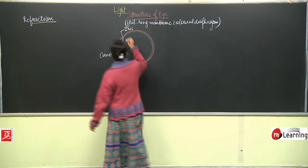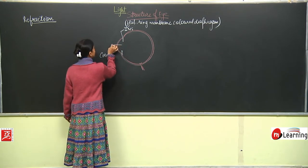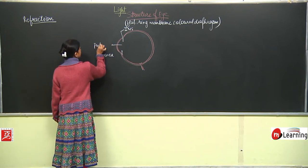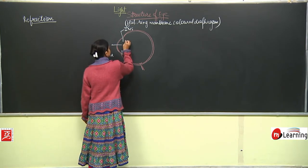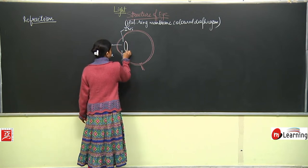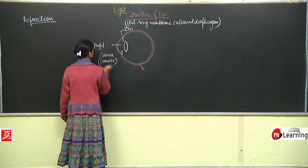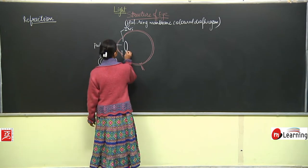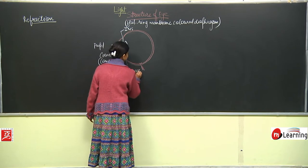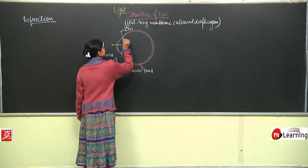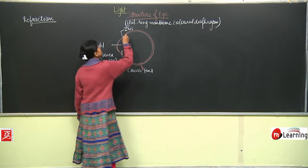After the iris, there is a gap between the iris, and this gap is known as the pupil. Now around here there is a lens. The cornea is bulgy and convex in shape, and the lens is also of convex shape. So we have a convex lens here.